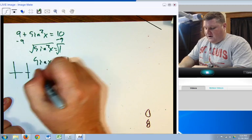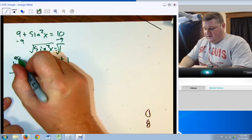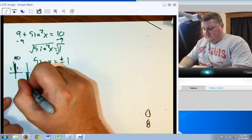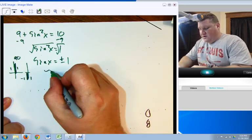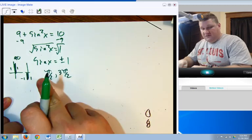Well, where is the opposite and the hypotenuse both 1? Well, you'd have 90 degrees, 1, 1. Or you'd have 270, negative 1, 1. And so, your answers here are pi over 2, 3 pi over 2, also known as 90 and 270.